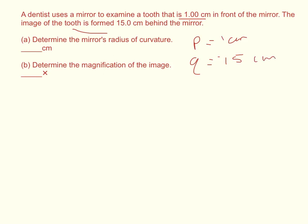And it wants us to find the radius so we just use the mirror equation. One over P plus one over Q is equal to 2 over R.